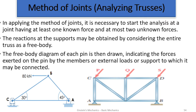So let's look at the conditions. In applying the method of joints, it is necessary to start the analysis at a joint having at least one known force and at most two unknown forces. That's interesting. So before I start my analysis at a joint, that joint must have at least one known force and at most two unknown forces.